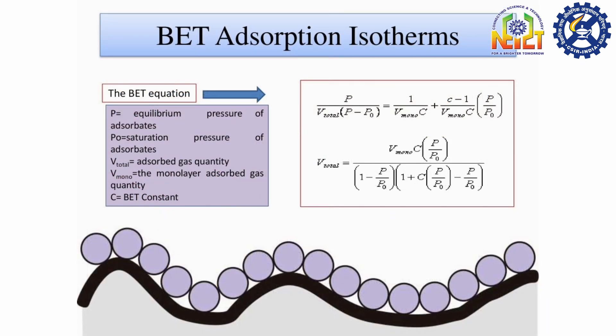The BET measures surface area based on gas adsorption. In physical gas adsorption an inert gas, mostly nitrogen, is adsorbed on the surface of a solid material. This occurs on the outer surface and in case of porous materials also on the internal surface induced by pores.